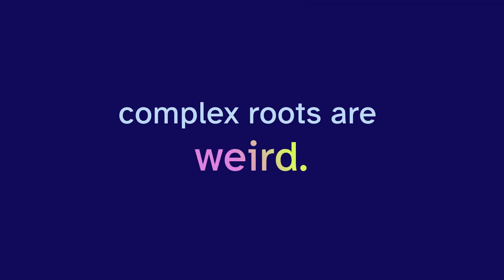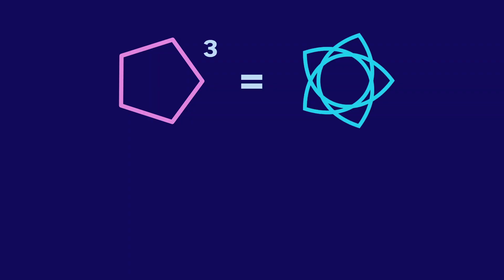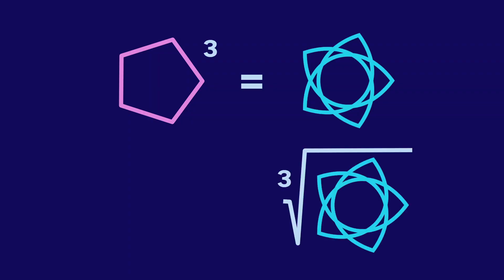Complex roots are weird. If we take all the complex numbers that make this pentagon, then cube them, we get this flower. And if we go backwards by taking the cube root of the flower, we get that pentagon, and this pentagon, and this pentagon. There's three of them.